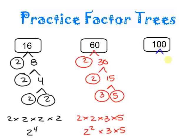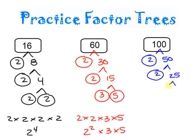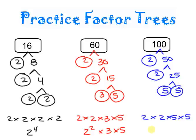Now I have 100, which you'd think would be really hard, but it's not. Start with 2s: 2 times 50 is 100. Break 50 up by 2: 2 times 25. Now 25 can't be broken up by 2s or 3s, but we can break it into two 5s: 5 times 5. The prime factorization is 2 times 2 times 5 times 5, or 2 to the second power times 5 to the second power.